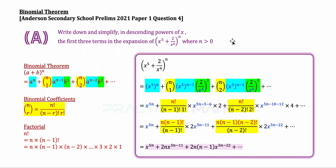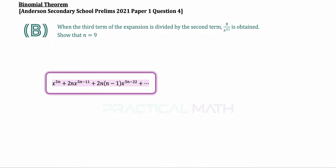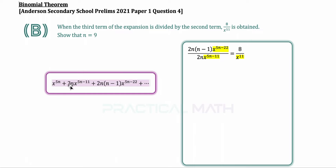That is the answer for part A. For part B, we are told that when the third term is divided by the second term, the result is 8 over x to the power of 11. We form an equation by setting term 3 divided by term 2 equal to 8 over x to the power of 11.